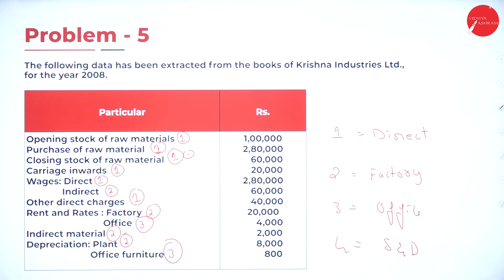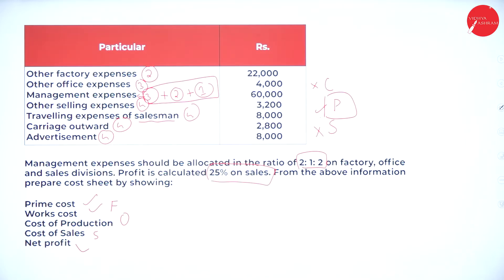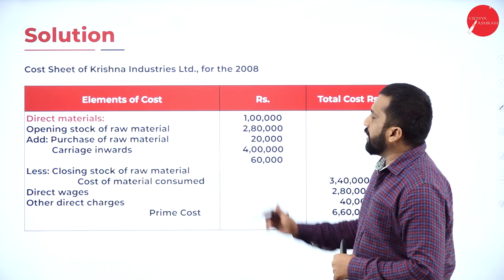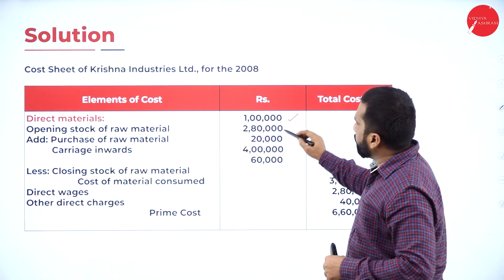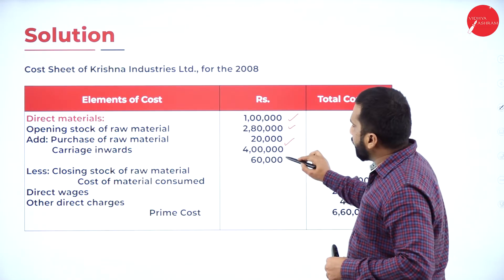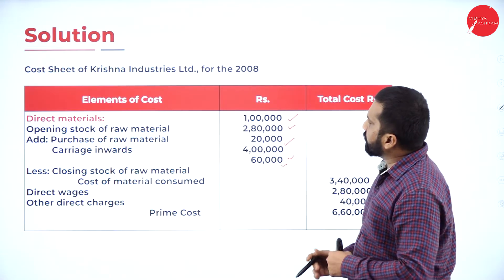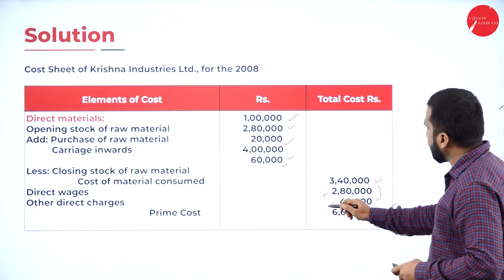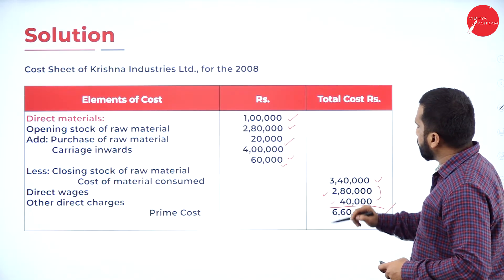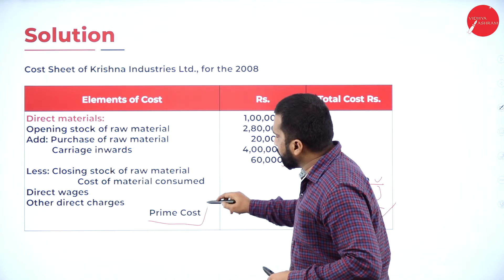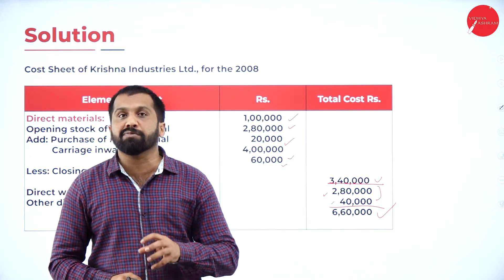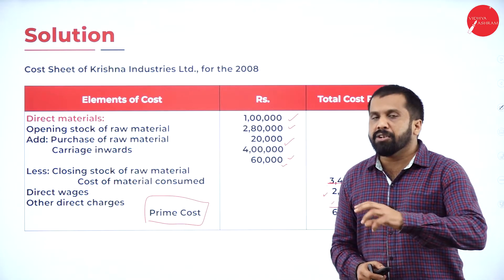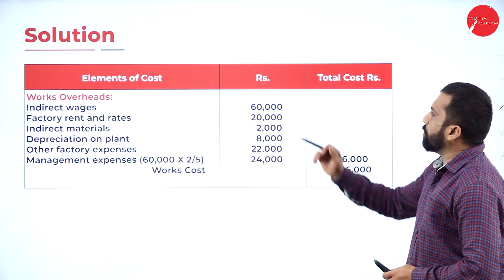For direct material: opening stock 1 lakh, add purchases, add carriage inward, minus closing stock. After deducting closing stock, the calculation gives 3 lakh 40 minus closing stock, then 280 plus 40 all put together gives 6 lakh 60,000. So the prime cost is 6,60,000. Whatever marks are allocated for prime cost in a 15-mark or 10-mark question, you will secure them with this answer.